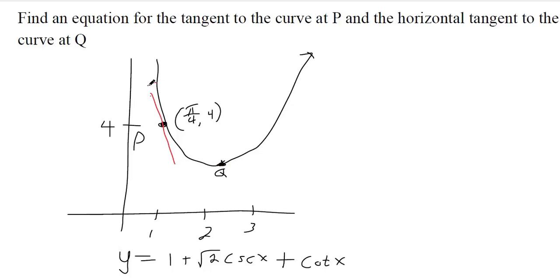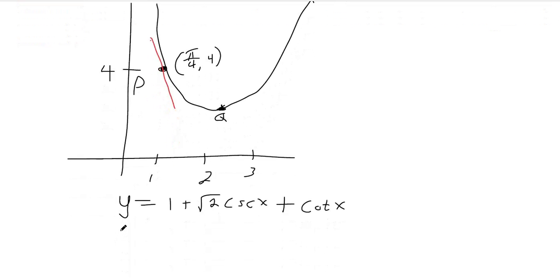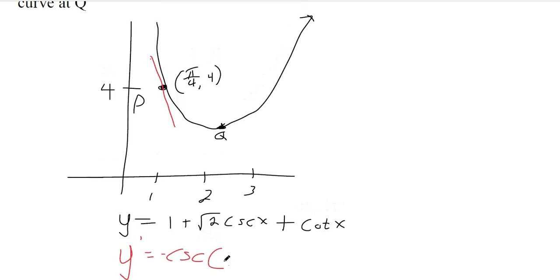If we want the tangent to the curve at this place, then we have the x-coordinate for where this locates. We want to know what that red slope is, so we can take a derivative of the equation they gave us with respect to x. The derivative of a constant is zero. The derivative of cosecant is negative cosecant x cotangent x.